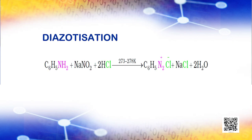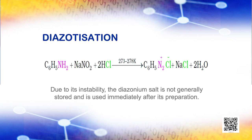Benzene diazonium chloride is prepared by the reaction of aniline with nitrous acid at 273 to 278 Kelvin. Nitrous acid is produced in the reaction mixture by the reaction of sodium nitrite with hydrochloric acid. The conversion of primary aromatic amines into diazonium salts is known as diazotization. Due to its instability, the diazonium salt is not generally stored and is used immediately after its preparation.